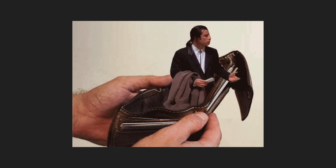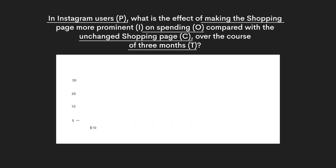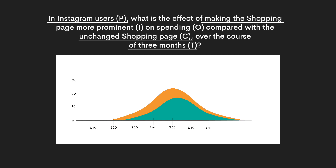Once you create your hypothesis, pick your sample population, run your A-B test, and then analyze your results. Let's continue with the Instagram example. Say you tested on 1,000 users per group. Your control group has an average spend of $50 with a standard deviation of $15, and your test group has an average spend of $53 with a standard deviation of $16. That may not seem like very much, but with large sample sizes you can be highly confident in rejecting the null hypothesis — meaning there is a real difference between the new page and the old page.